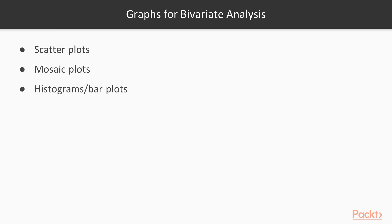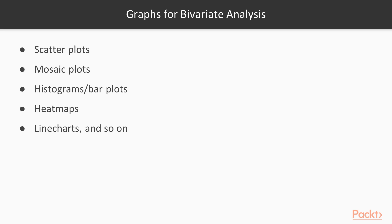You can also use different versions of histograms and bar plots for bivariate analysis. Another interesting plot is heat maps, which we'll see in subsequent videos. You can also combine multiple line charts together for bivariate analysis.